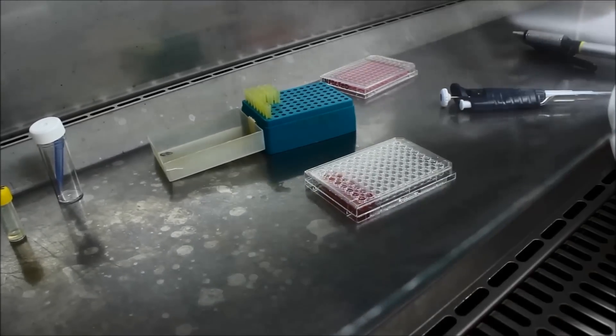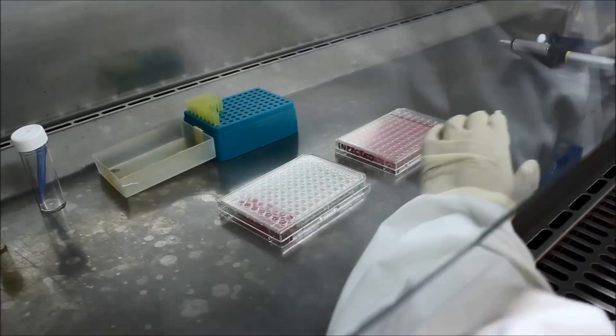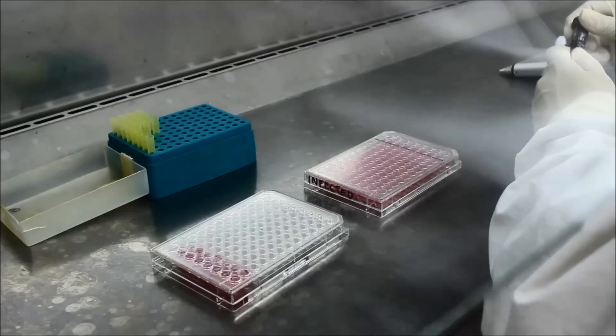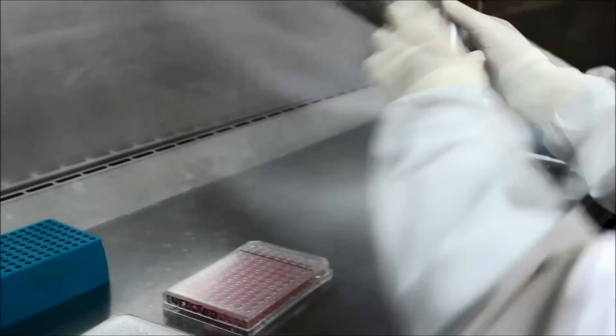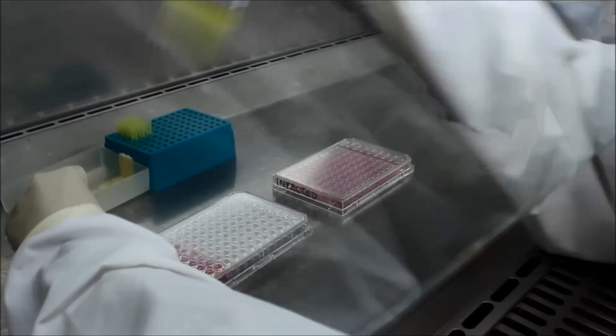Once your dilutions are complete, then add 25 µL of each dilution into the corresponding well on your infected tray as shown. Leave the last two columns for virus-free controls.